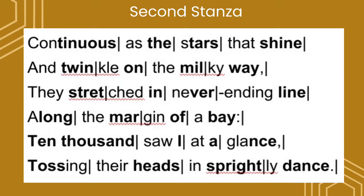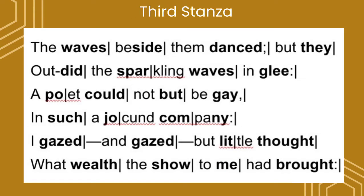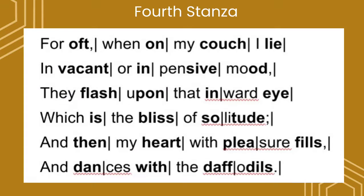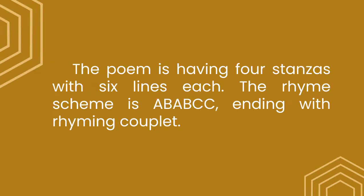In the last two stanzas, which are the third and the fourth, it is iambic tetrameter, for the reason that it is unstressed then followed by stressed and it has four feet in each line. The poem has four stanzas with six lines each. The rhyme scheme is ABABCC, ending with a rhyming couplet.